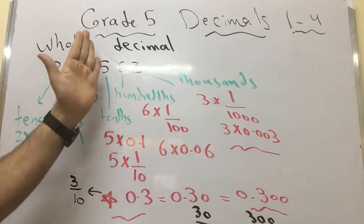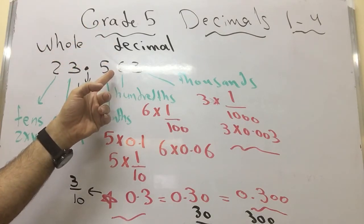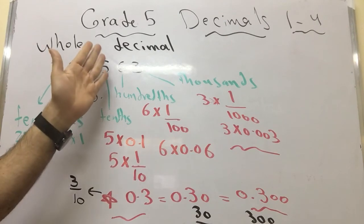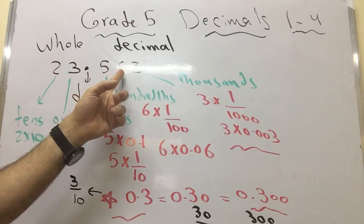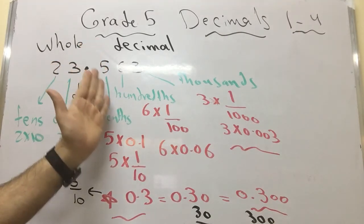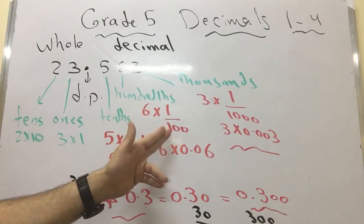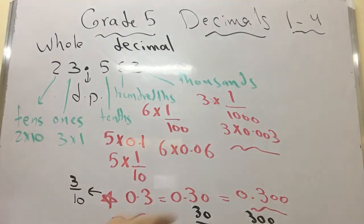The next digit, 6, is in the hundredths place. It means it equals 6 multiply 1 over 100, which equals 6 multiply 0.01.